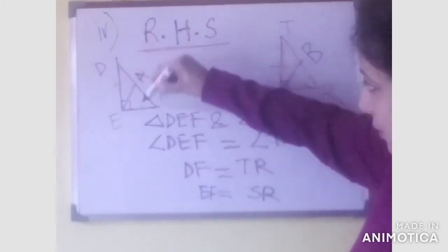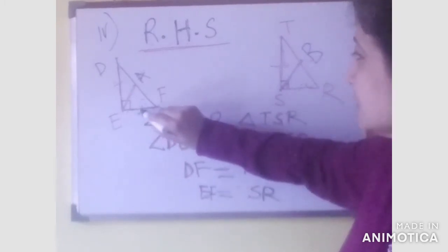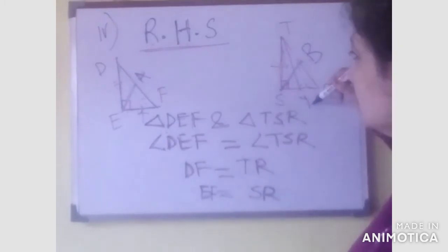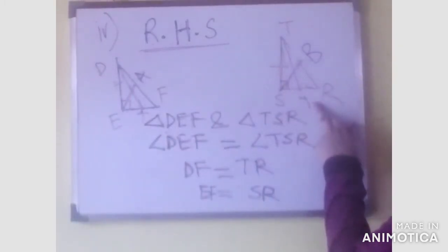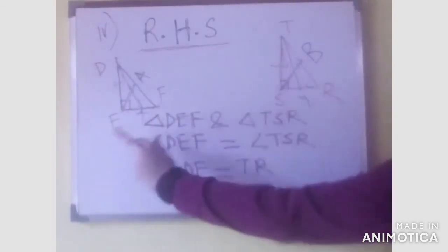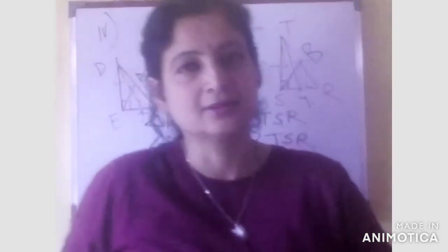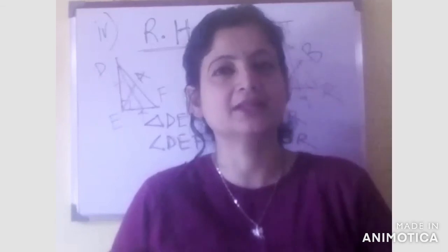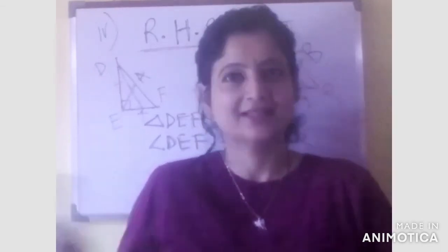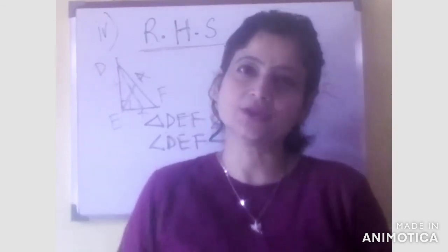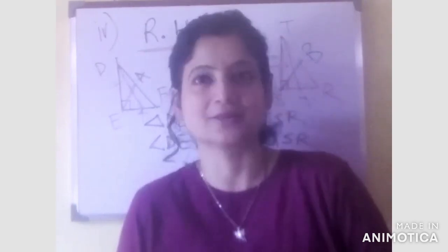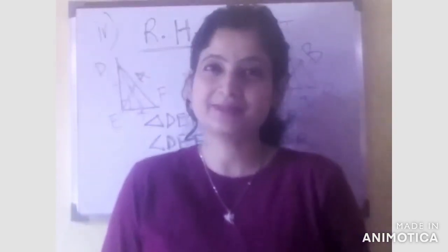Suppose this is triangle DEF with one median, say EA, and here is a corresponding median SB. Then median EA will be equal to median SB as the two triangles are congruent. Similarly, if DX is a median and TY is a corresponding median, then DX equals TY. So the congruent triangles have corresponding sides, angles, medians, perimeter, and area all equal. But equal area for both triangles does not necessarily mean they are congruent. That's all for today — keep watching Mary's Math Club, subscribe, like, and share with your friends. Bye!